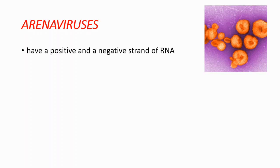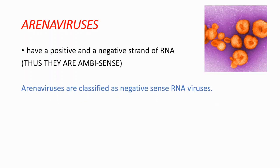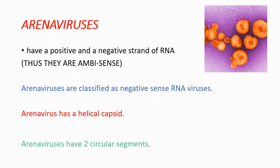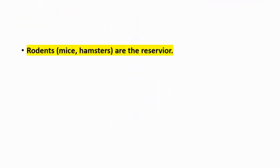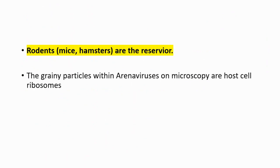RNA viruses have a positive and negative strand of RNA, thus they are ambisense. You can see this in the question stem. RNA viruses are classified as negative sense RNA viruses and they have a helical capsid and two circular segments. Rodents such as mice and hamsters are the reservoir, and the grainy particles within RNA viruses on microscopy are host cell ribosomes. Grainy particles — RNA is the Latin root for sand — is a great way to remember this.